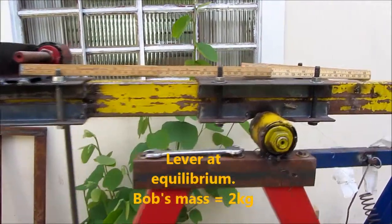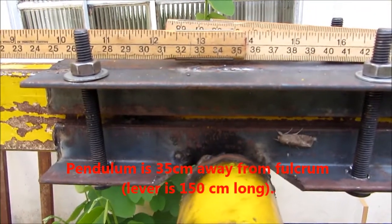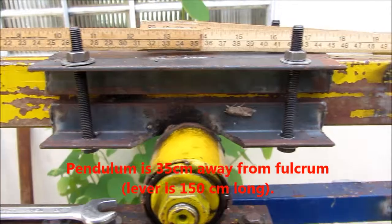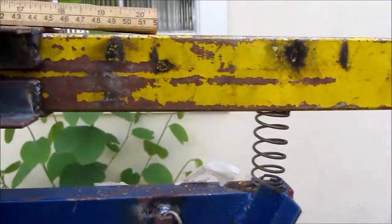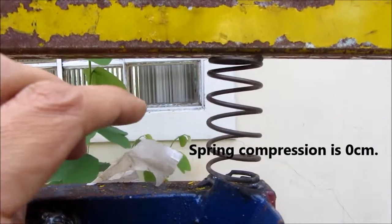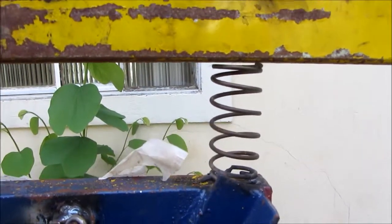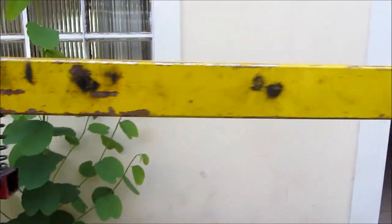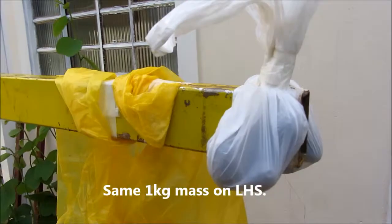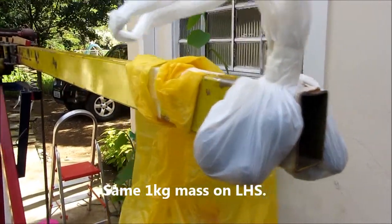The pendulum now is placed at 35 centimeters away from the fulcrum, but the bob has a 2 kilogram mass. You see that the conditions are the same - the lever is in equilibrium. You notice here that the spring compression is zero centimeters. If we push slightly, you see that it goes up and down with much less velocity than last time. I'm using the same mass on the left-hand side: one kilogram.